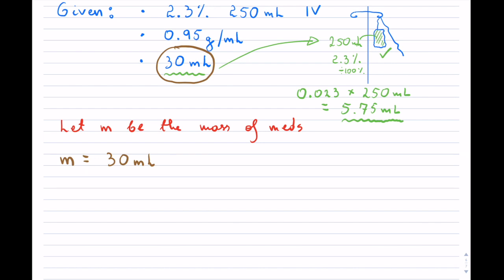And now we're going to be multiplying this. So how much of the 30 milliliters is actually the medication itself? Well, we know that in a 250 milliliter IV bag, 5.75 milliliters is medication. But we do not have 250. We only have 30 milliliters.